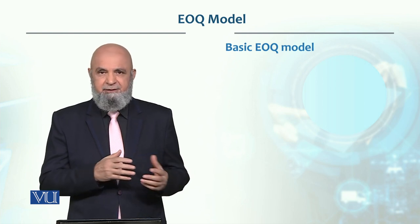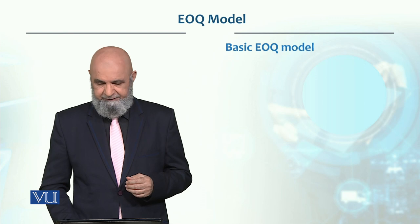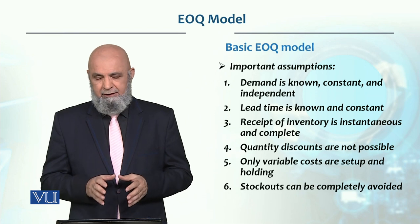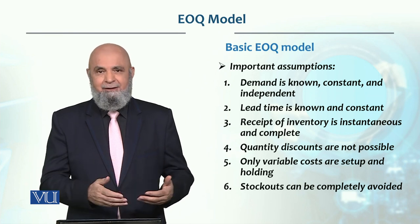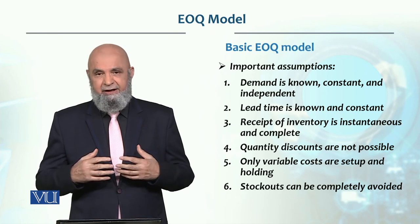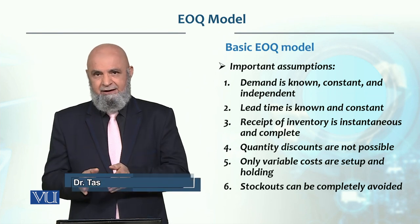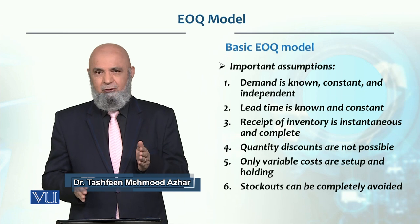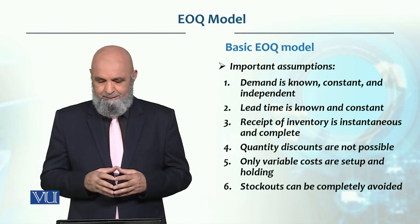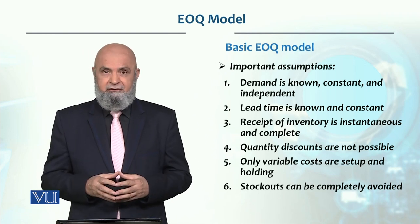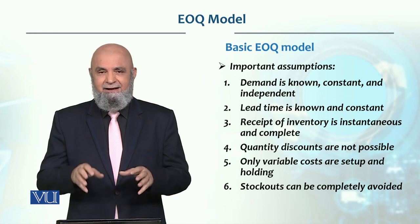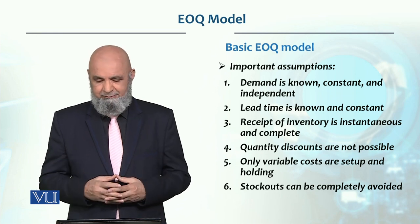The non-instantaneous model is different. The first assumption is that demand is known, constant, and independent of any other demand — this is called independent demand. It is known and constant. We know how much time it will take to be finished so that we can receive the second order, though in normal situations this is not true. But the model simplifies this for simplification purposes.